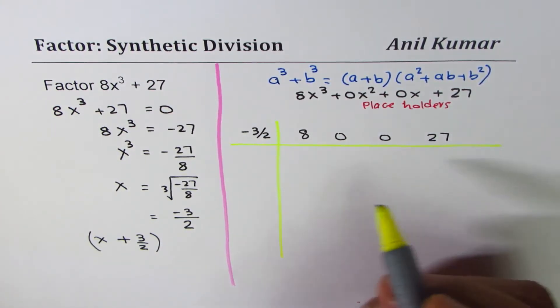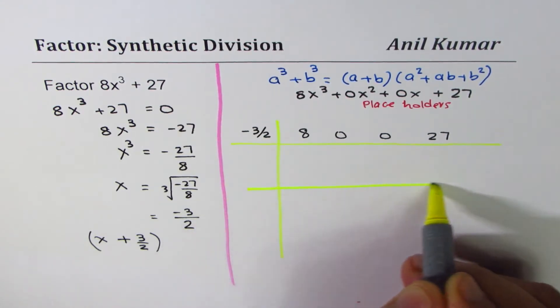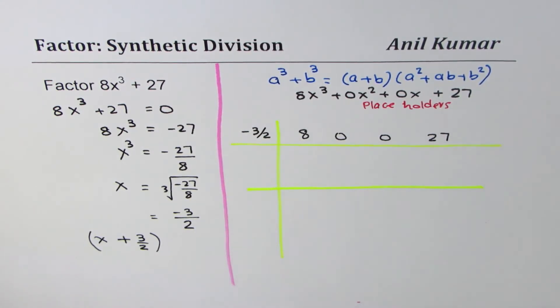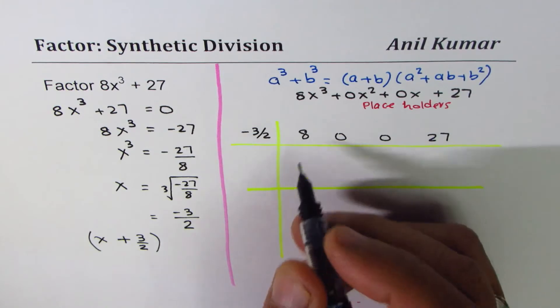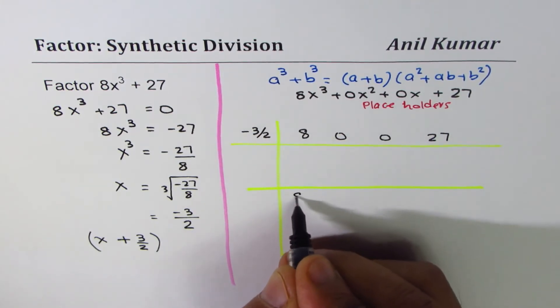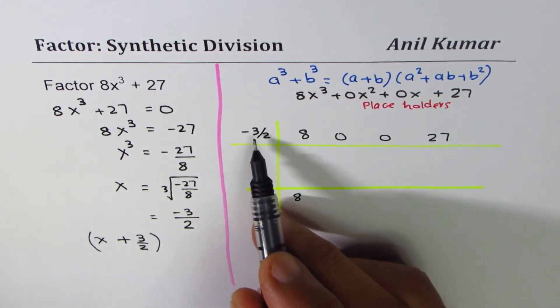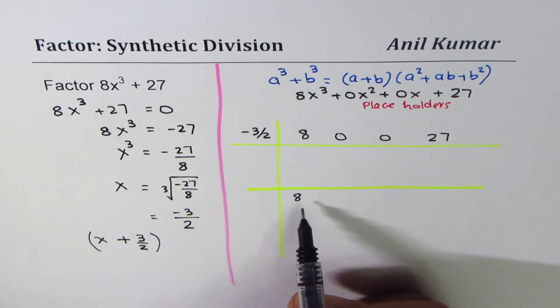When we divide, we will draw a line here and write terms under this line. The first step is to bring down the leading coefficient, which in our case is 8. So we bring down 8 and multiply that by -3/2.